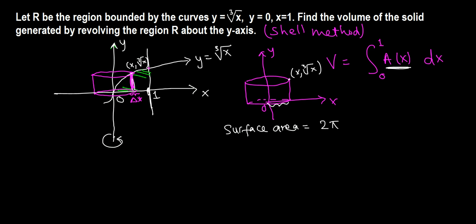The height is cube root of x. So we have 2πx times cube root of x. Let's simplify: cube root of x means x raised to 1/3, so x times x^(1/3) equals x^(4/3).